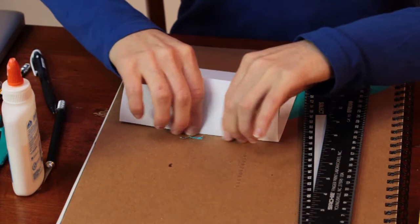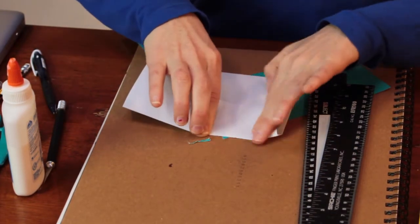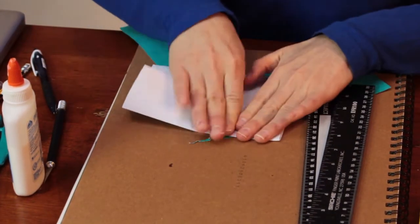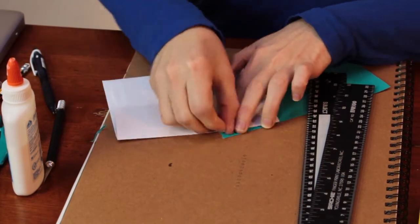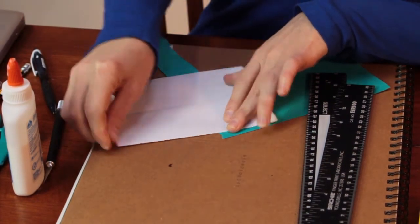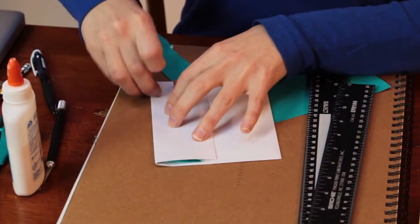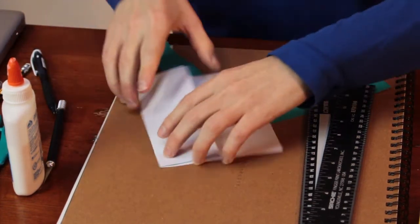And then fold the envelope down as you would close it to give that a good crease. Reinforce it by running your nail across the crease.